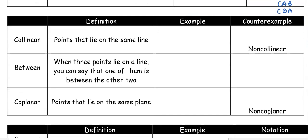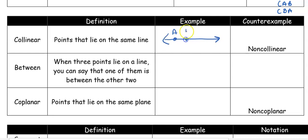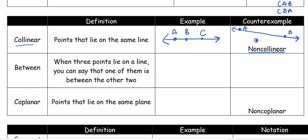Now we're moving to definitions because we have our undefined terms. Collinear means points that all lie on the same line. For example, points A, B, and C are collinear because they all lie on the same line. If they're not collinear, they're non-collinear, meaning they're not on the same line — for example, if A and B are on one line but C is off to the side, then A, B, and C are non-collinear.